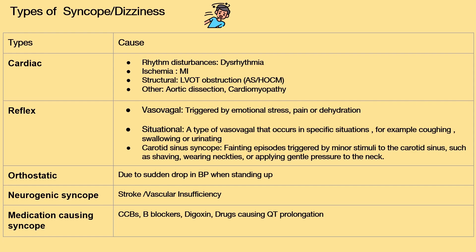Reflex syncope includes vasovagal syncope, triggered by emotional stress, pain, or dehydration. Situational syncope is a type of vasovagal that occurs in specific situations such as coughing, swallowing, or urinating. Carotid sinus syncope involves fainting episodes triggered by minor stimuli to the carotid sinus, such as shaving or wearing neckties.